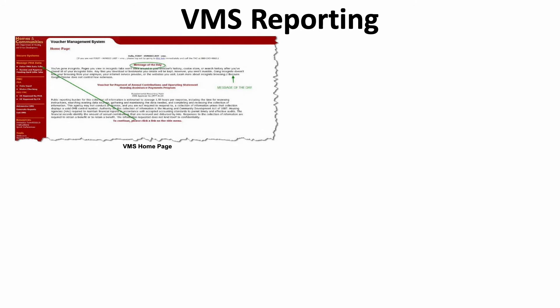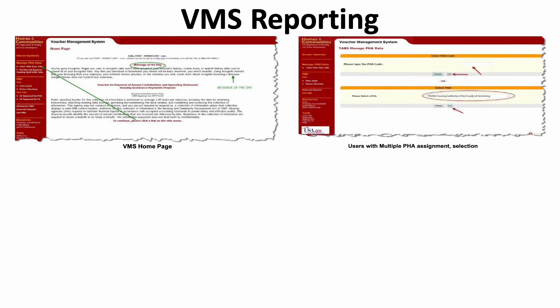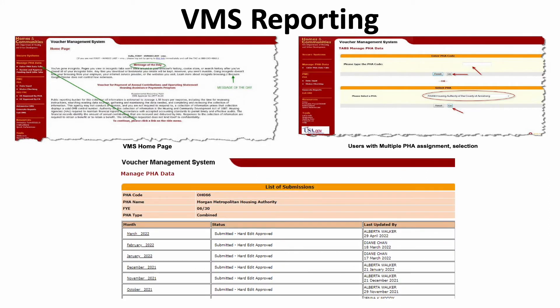When you log in to VMS, you'll need to select your PHA. You will have access to all reports that have been previously submitted and the report to be submitted for the current month. If a prior month correction is needed, select the month to make appropriate corrections. To submit data for the current month, select the appropriate report. On the current month's report, you will see seven tabs across the top of the screen, and five of these tabs require data entry.